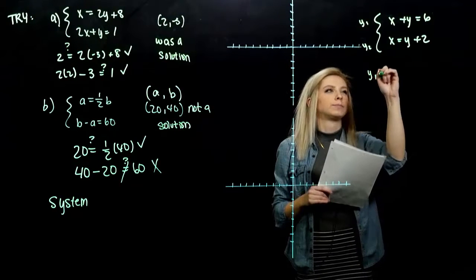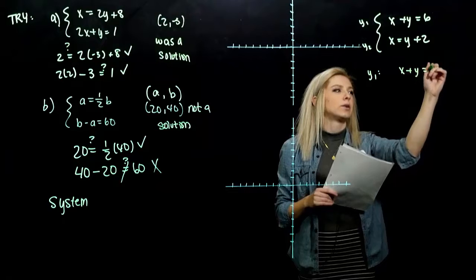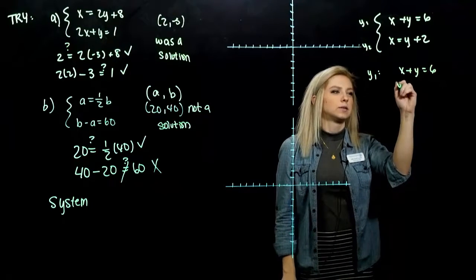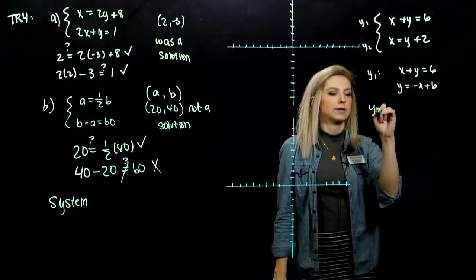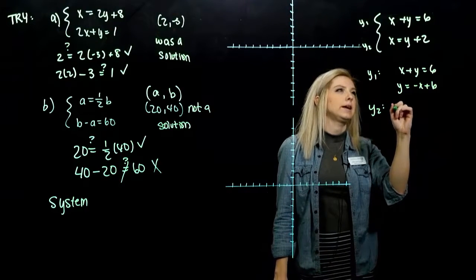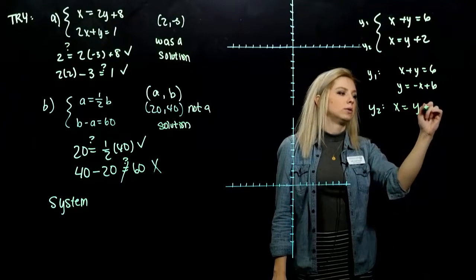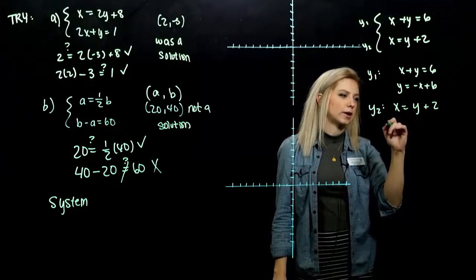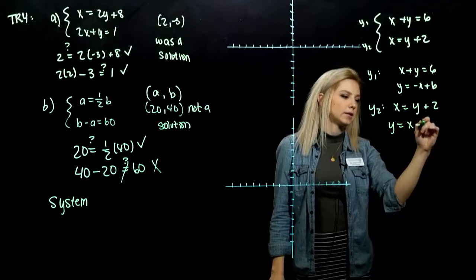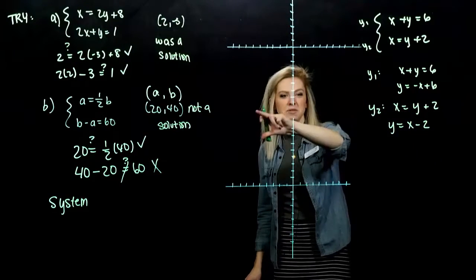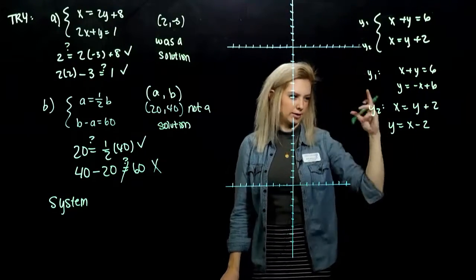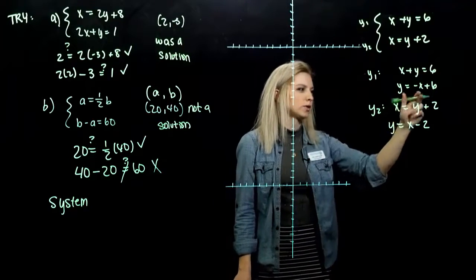So the first one, I want to solve the system: x plus y equals 6 and x equals y plus 2. There's a lot of different ways that we can go about graphing these. We can solve for the y equals mx plus b form. We can plug in for the intercepts. It doesn't really matter. But I'm going to label the first one y1, the second one y2, just so we can talk about the different equations. I think I'm going to go ahead and solve for y so we can graph these. So the first one, to get y on its own, what do we need to do? Subtract x from both sides and we're there.